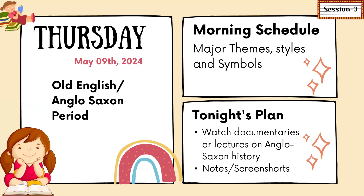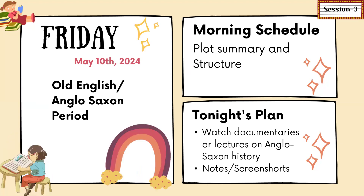On the next day, move on to the major themes, styles, and symbols of the particular literary age. By this point, you have already covered salient features, major and minor writers, and major and minor works. Now focus on themes. Take out notes — they can be digital or manual, depending on your schedule and available time.